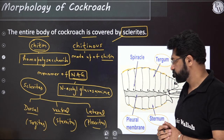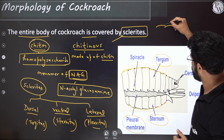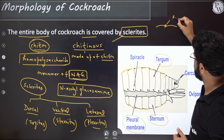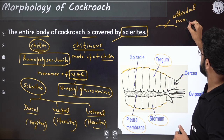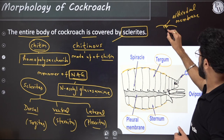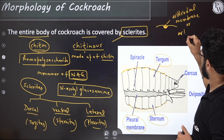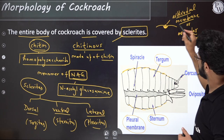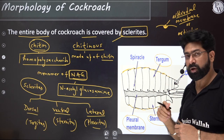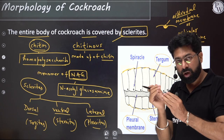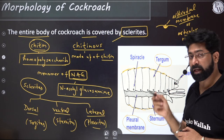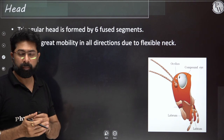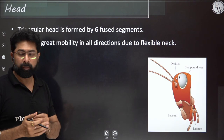These sclerites are held together by a structure called the arthrodial membrane, also called articular membrane. This membrane holds the sclerites together — if you want to move, the segments should not separate from each other. So arthrodial or articular membrane connects and holds the two sclerites together.